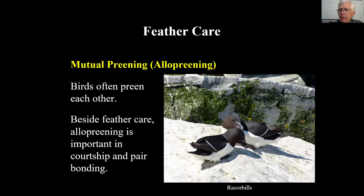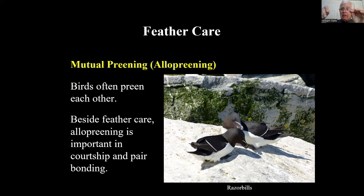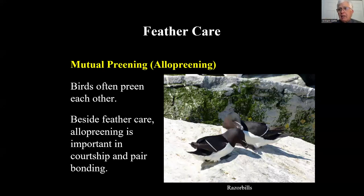There's also mutual preening — allopreening. These two razorbills photographed off the coast of Maine are preening each other, going through each other's feathers like monkeys grooming each other's fur. It's common among some mammals and birds. But it also serves another purpose: it's part of pair bonding. You scratch my head — that feels good — that's what's going on.